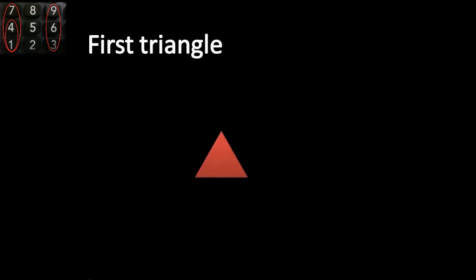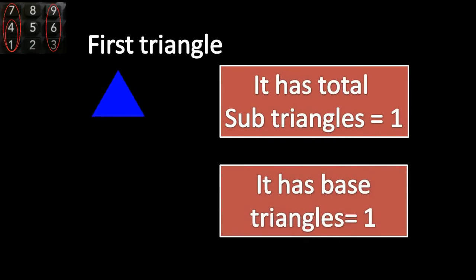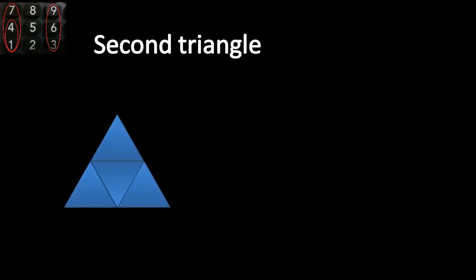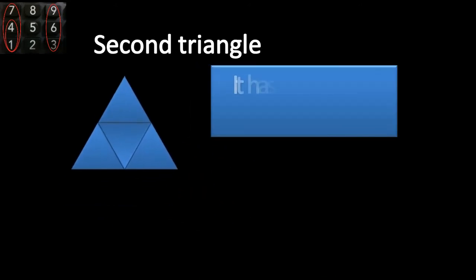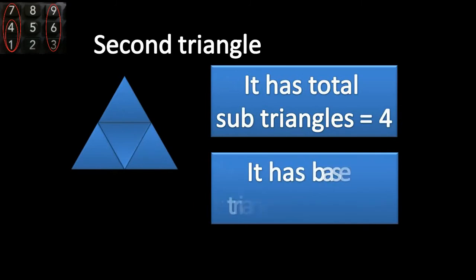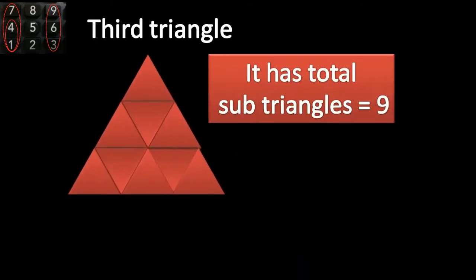First triangle: it has total sub triangles equal 1 and base triangles 1. Second triangle is much larger; it has sub triangles equal 4 and base triangles equal 3. The third triangle is much much larger than the second.